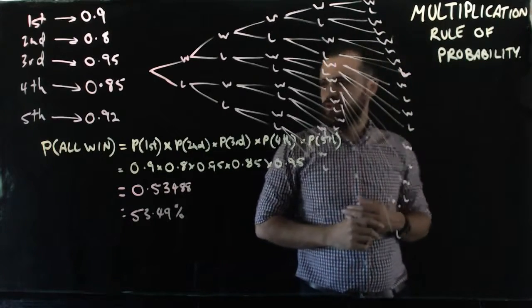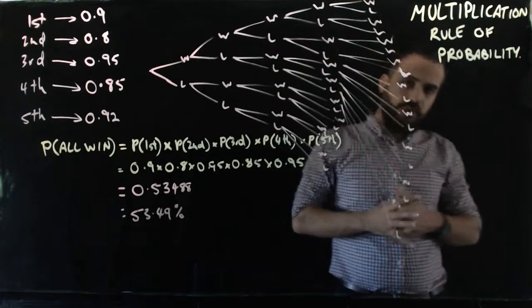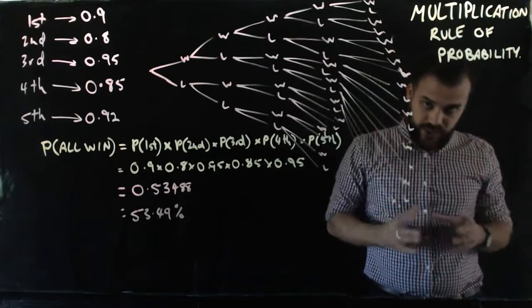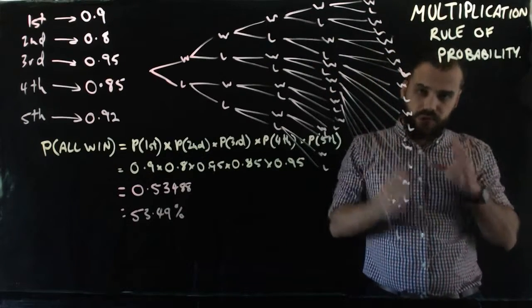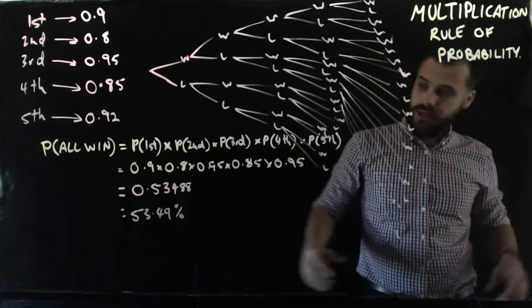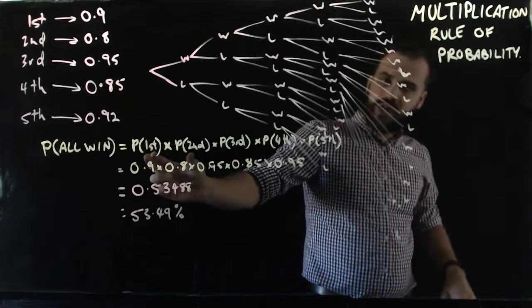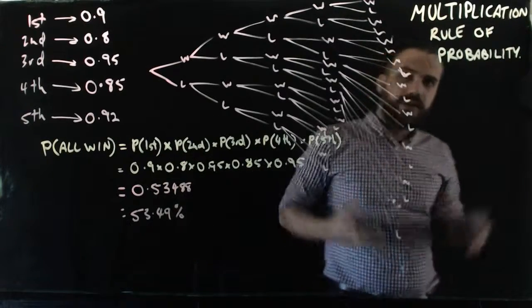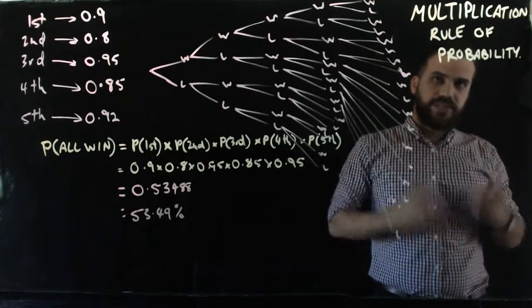There's our multiplication rule of probability. The takeaway is that if you want to know the probability of two events happening, either one after the other or at the same time, use the multiplication rule. Find the probability of the first one, find the probability of the second one, and then multiply them together.